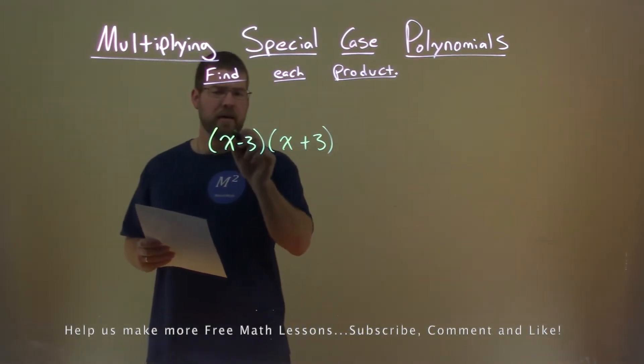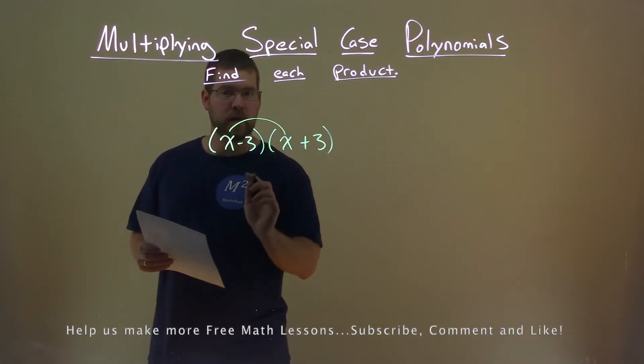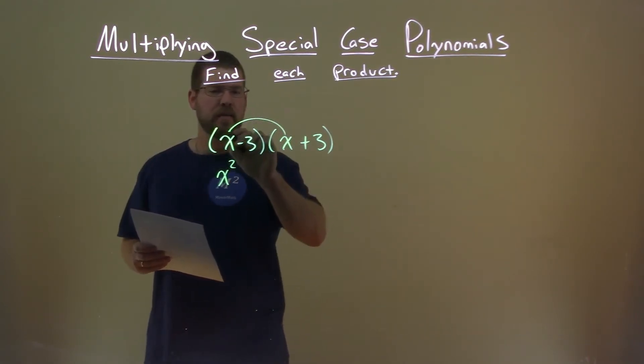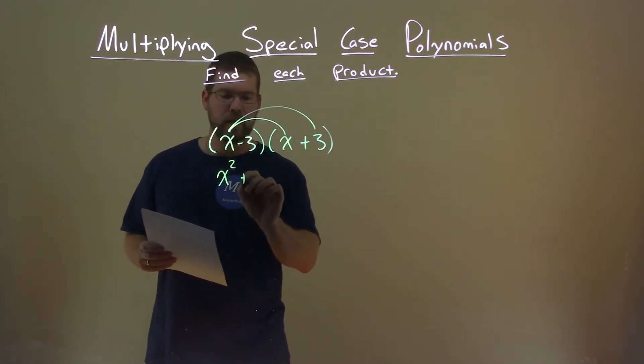Well, we start with the first x, and we multiply that by this x, and we get x squared. We then take this x and multiply it by that 3, and x times 3 is a positive 3x.